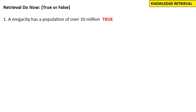Let's check our answers to the retrieval quiz. A megacity has a population of over 10 million people — that is true. You may sometimes see London in textbooks as a megacity, but officially it isn't because it has about seven to eight million people. Sometimes it is classed as a megacity because during the daytime, due to commuter workers coming into London, the population does hit around 10 million. But London is not a megacity, although it is a large urban area.